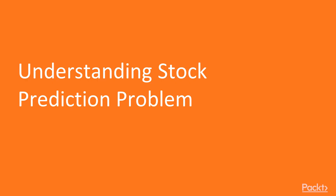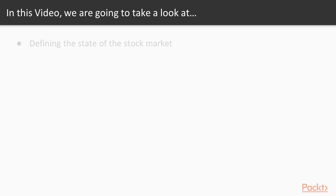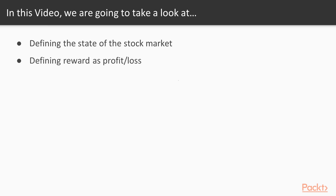This is the first video in which we'll be understanding the stock prediction problem. We'll define the state of the stock market, then define reward as profit or loss. Depending on the action of our actor — buy or sell — we will get feedback: profit comparing to the previous value, or loss if we sell at a lower price.